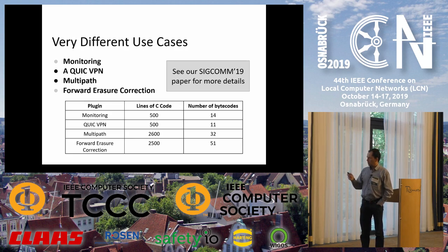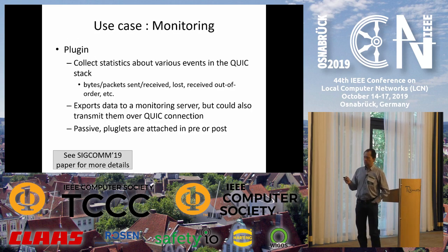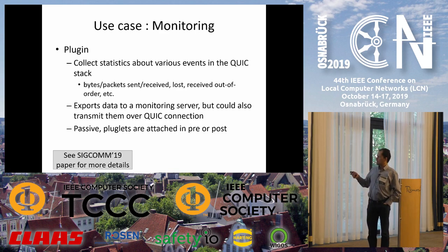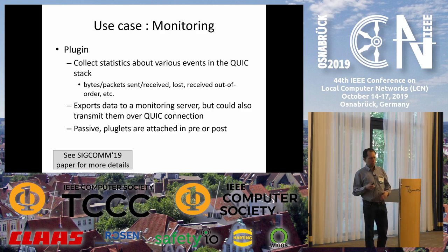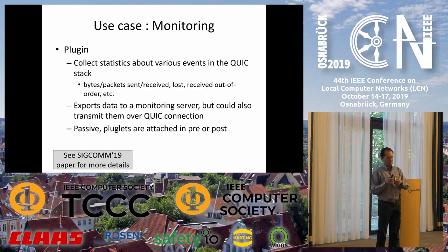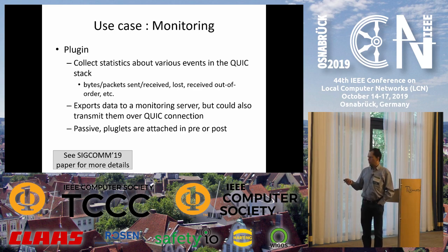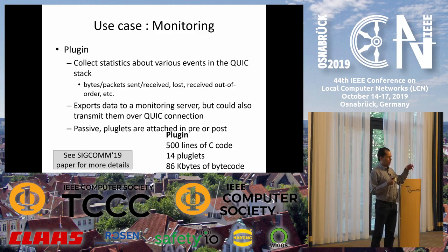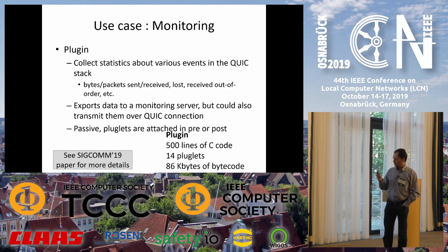There are very different use cases for QUIC plugin extensions. The first is monitoring: same as for TCP, adding lots of statistics about various events — number of bytes, packets sent, received, lost, out of order, changes in round-trip time, changes in congestion window, and blocking from the application. Inside the QUIC connection you can export data locally but also send it back to the server by sending specific frames over the QUIC connection. This is done with about 500 lines of C code, which is 86 kilobytes of bytecode to download from the server. It is also possible for the client to send specific plugins to the server if the server accepts client plugins.